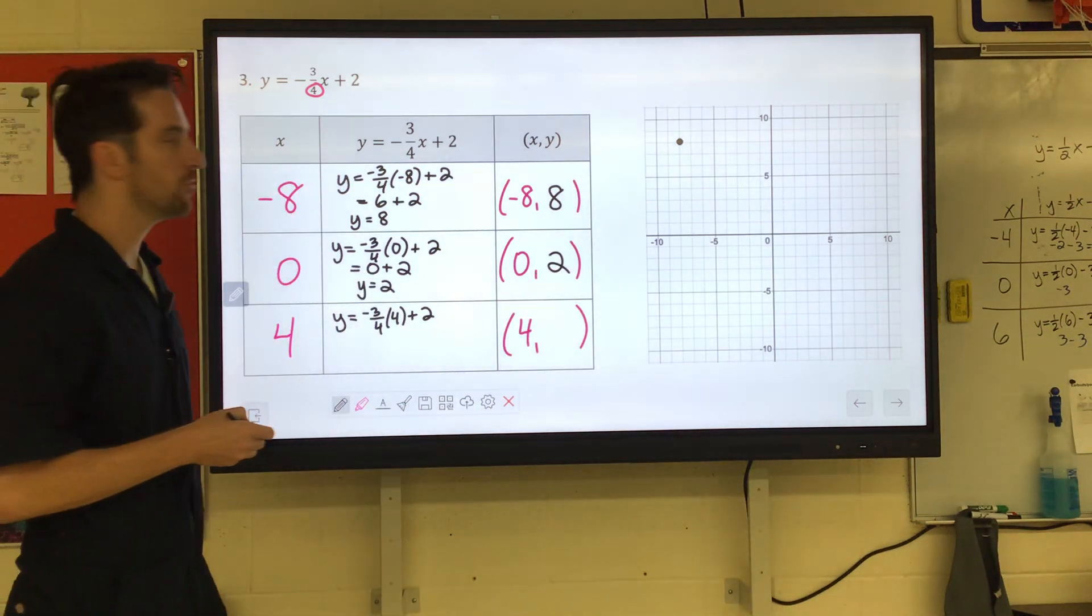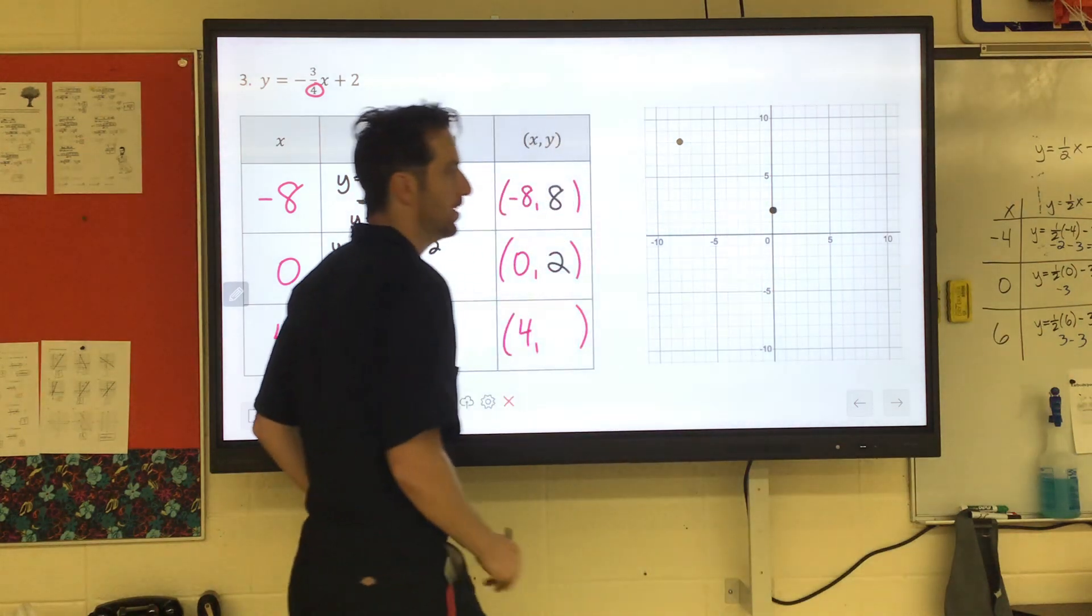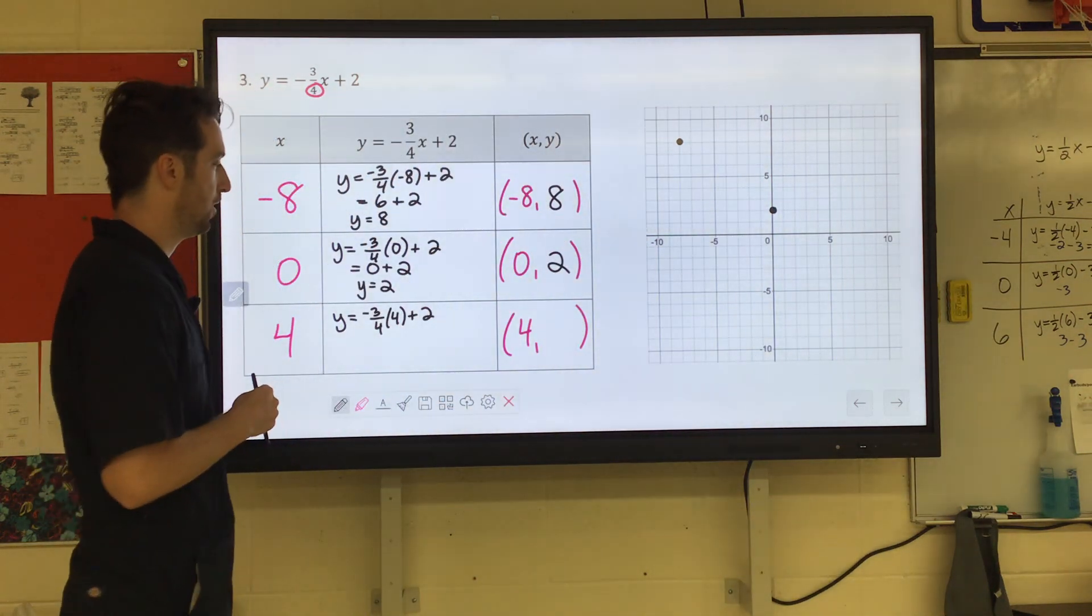When we put in zero for x, we got out two for y. So we'll go ahead and plot the point zero two.